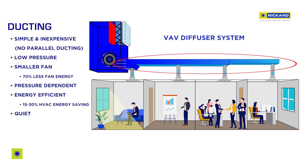On the other hand, the ducting used in a VAV diffuser system is simpler and cheaper because there are no secondary ducts. The pressure requirements are much lower due to an absence of obstructions in the ducting, like VAV boxes and balancing dampers. The smaller fan and pressure dependent requirement of the diffusers results in a system that uses about 70% less fan energy, or about 15 to 30% less HVAC energy.